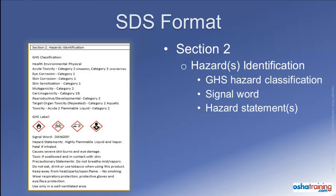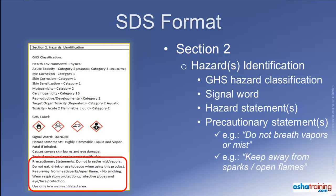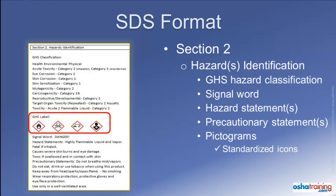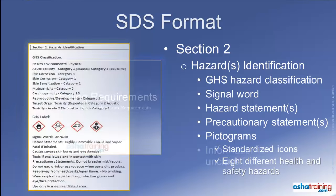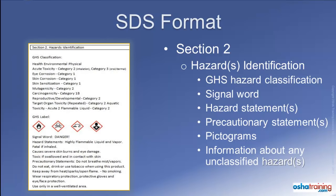Section 2 of the safety data sheet also displays applicable precautionary statements. These are standardized in the GHS system and convey information about how to prevent or lessen exposure to the hazards of a product. And something fairly new to us here in the United States are pictograms — standardized icons that let workers quickly identify the types of hazards associated with the product. There are eight different pictograms for the health and safety hazards covered in the GHS system. Information about any unclassified hazards not covered in the GHS system, such as combustible dust, will also be provided in this section.